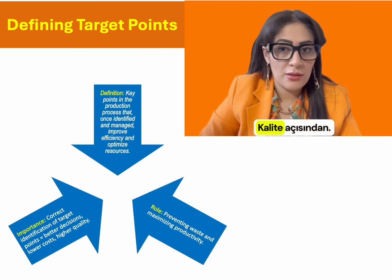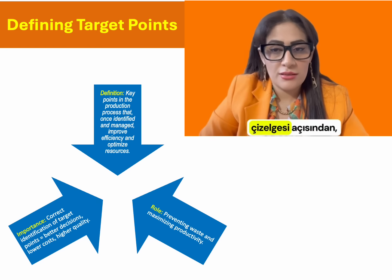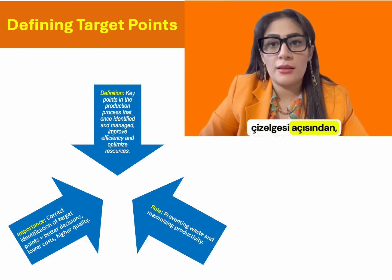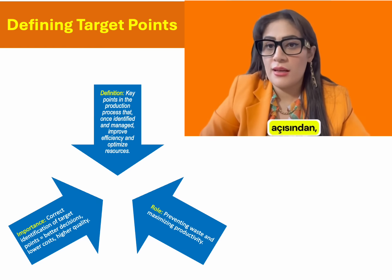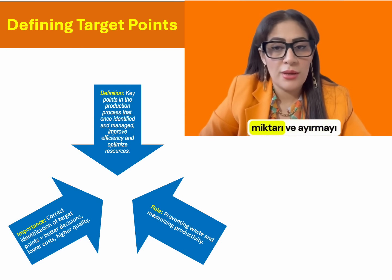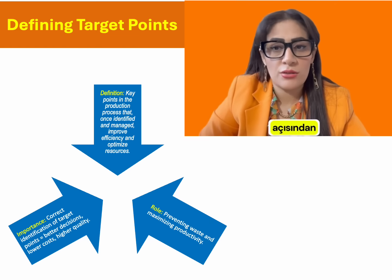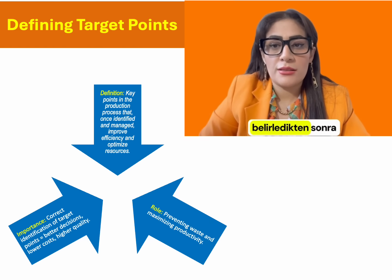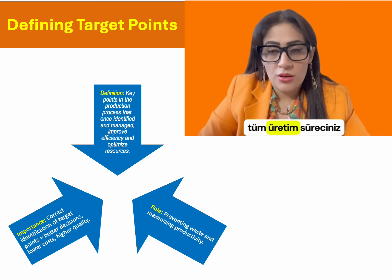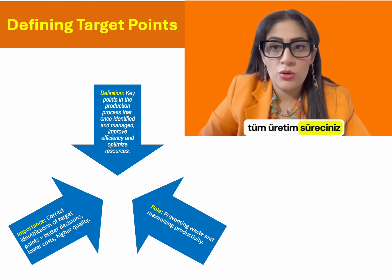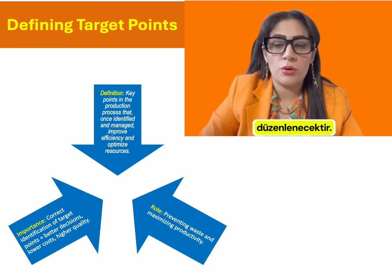In terms of quality you can define your product, in terms of timeline, in terms of production capacity, in terms of the amount and financial resources you intend to allocate. Once you have set this target point, your entire production process will be organized based on that target point.